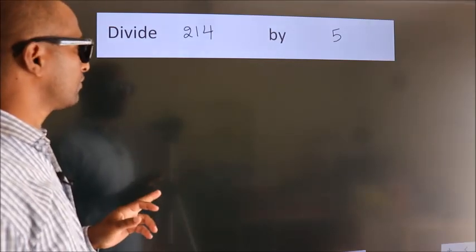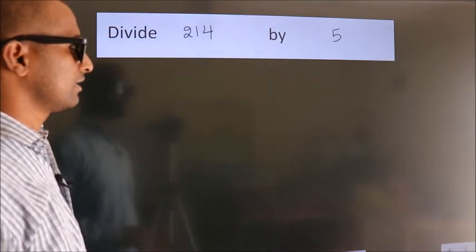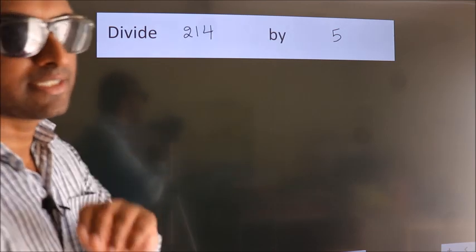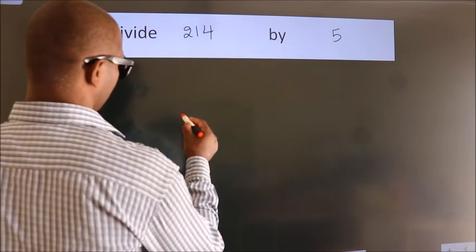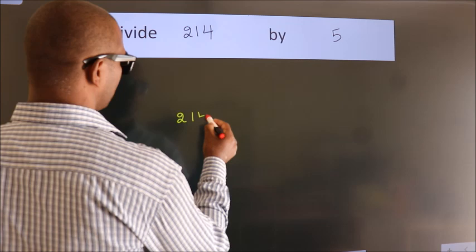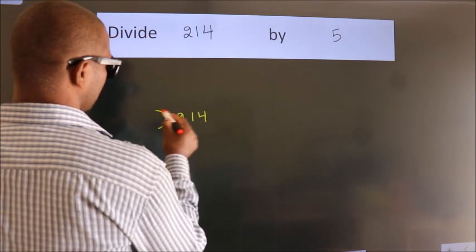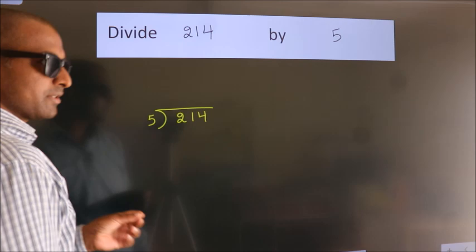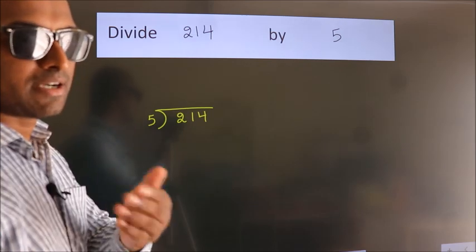Divide 214 by 5. To do this division, we should frame it in this way. 214 here, 5 here. This is your step 1. Next.